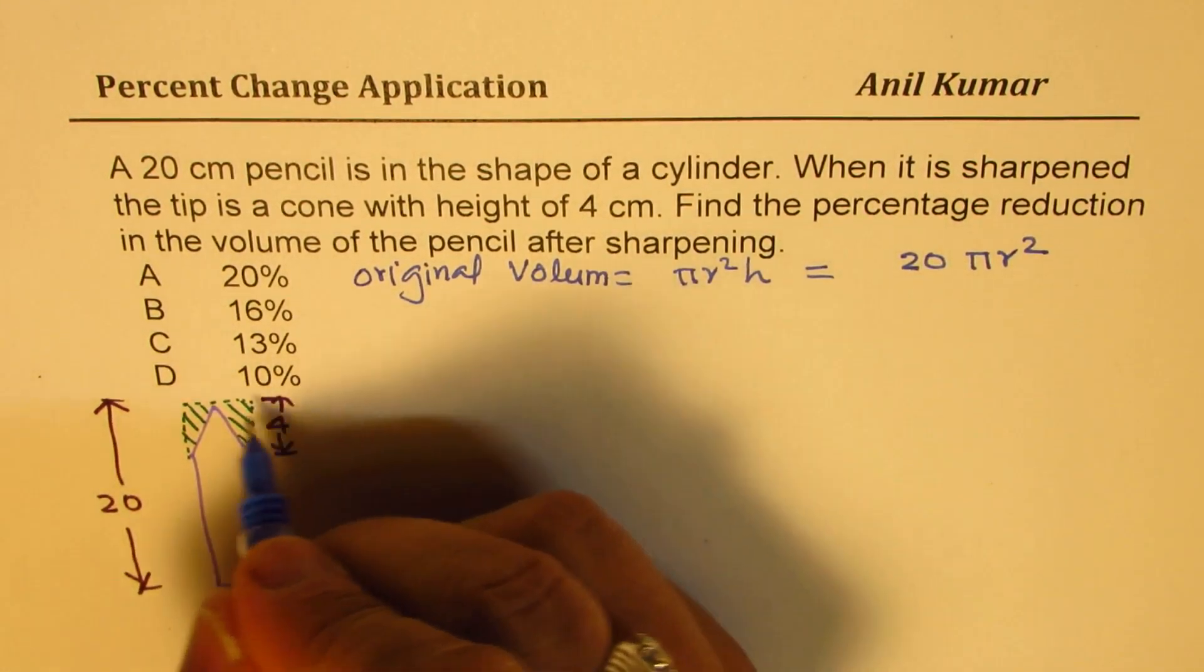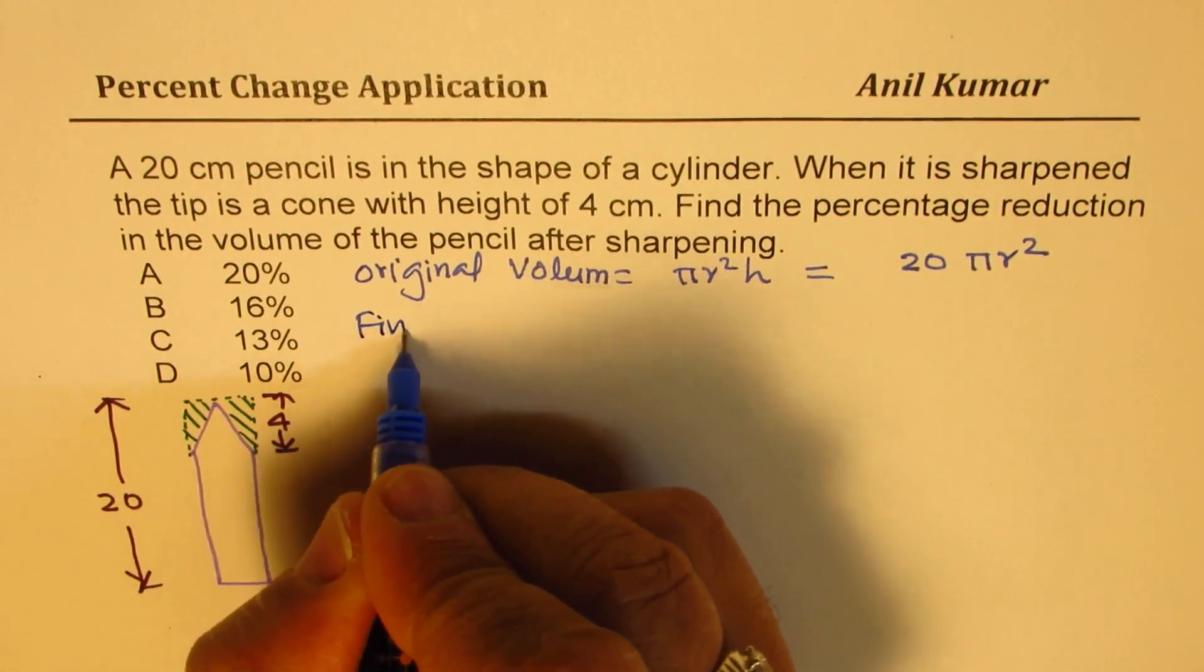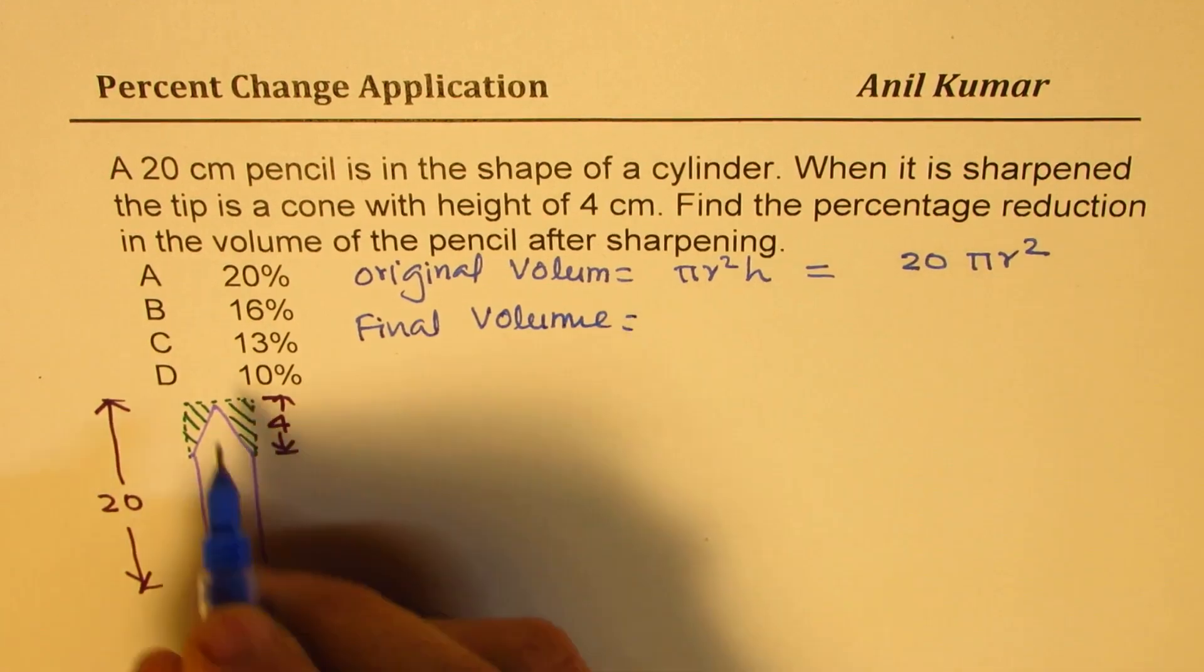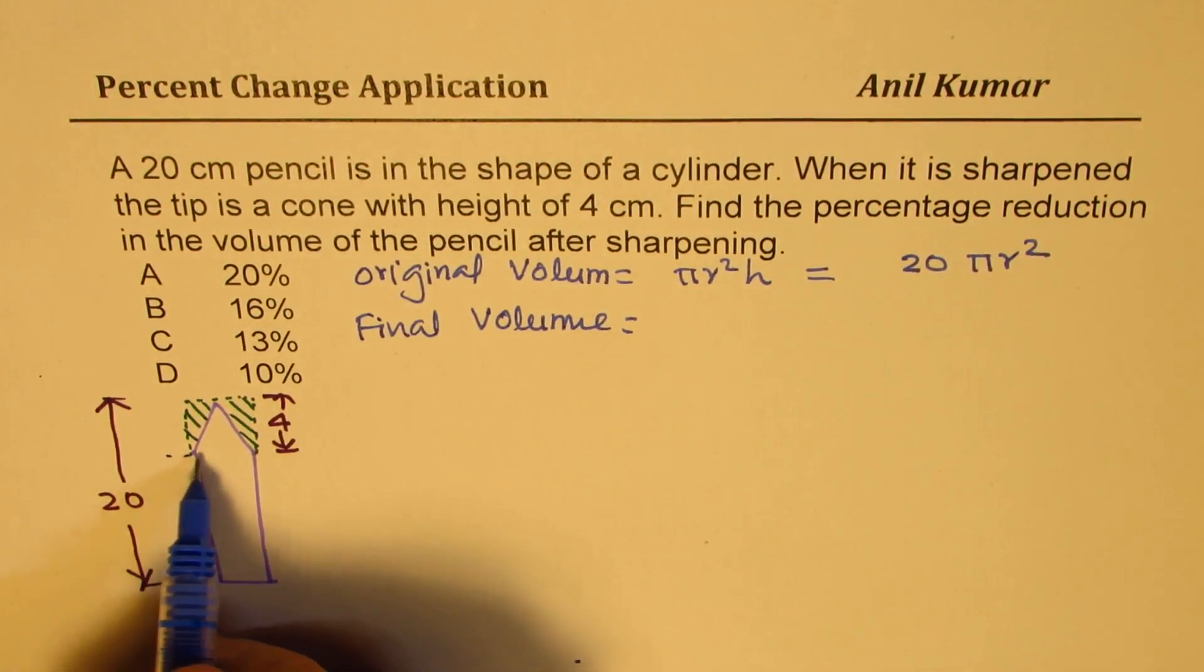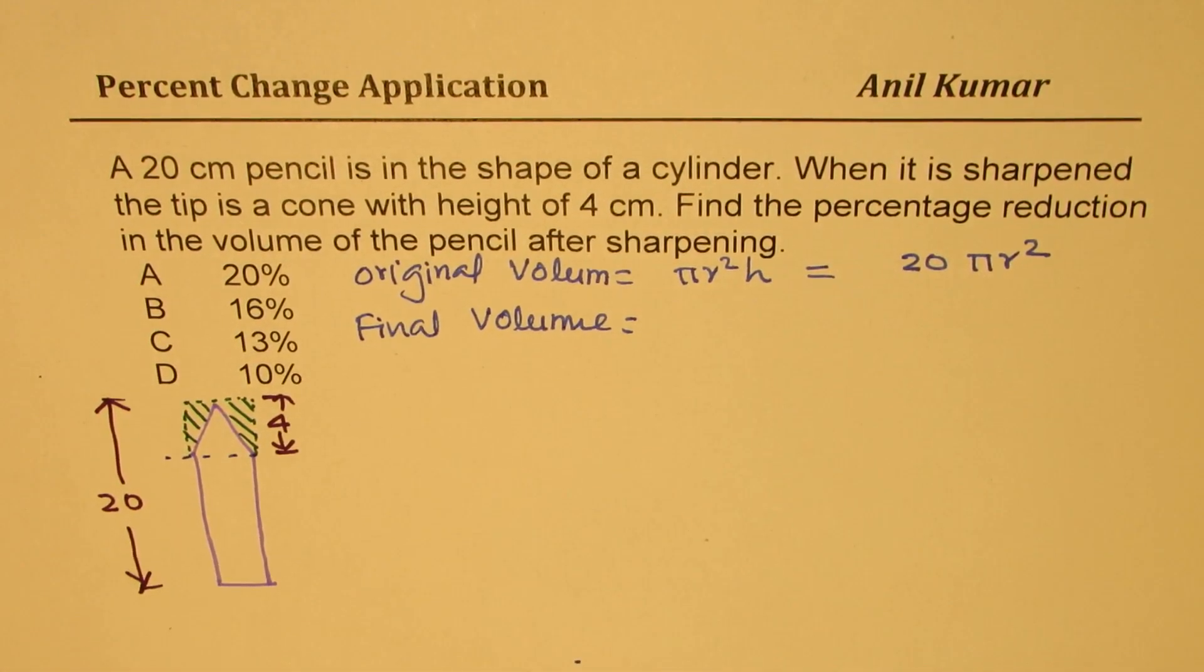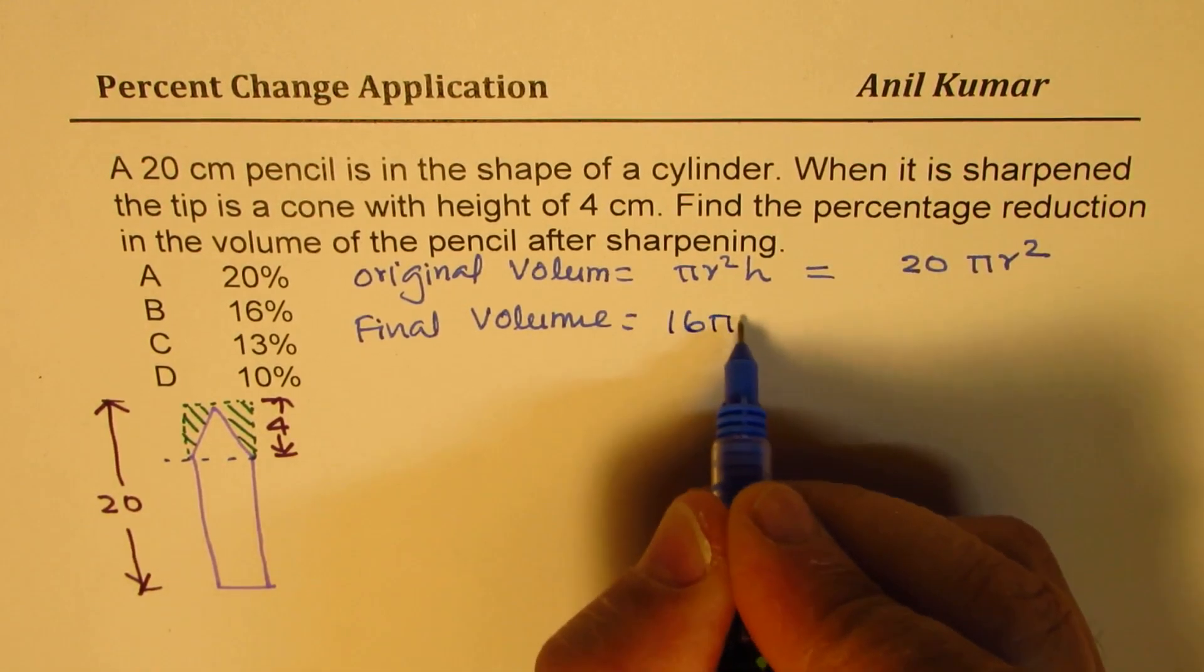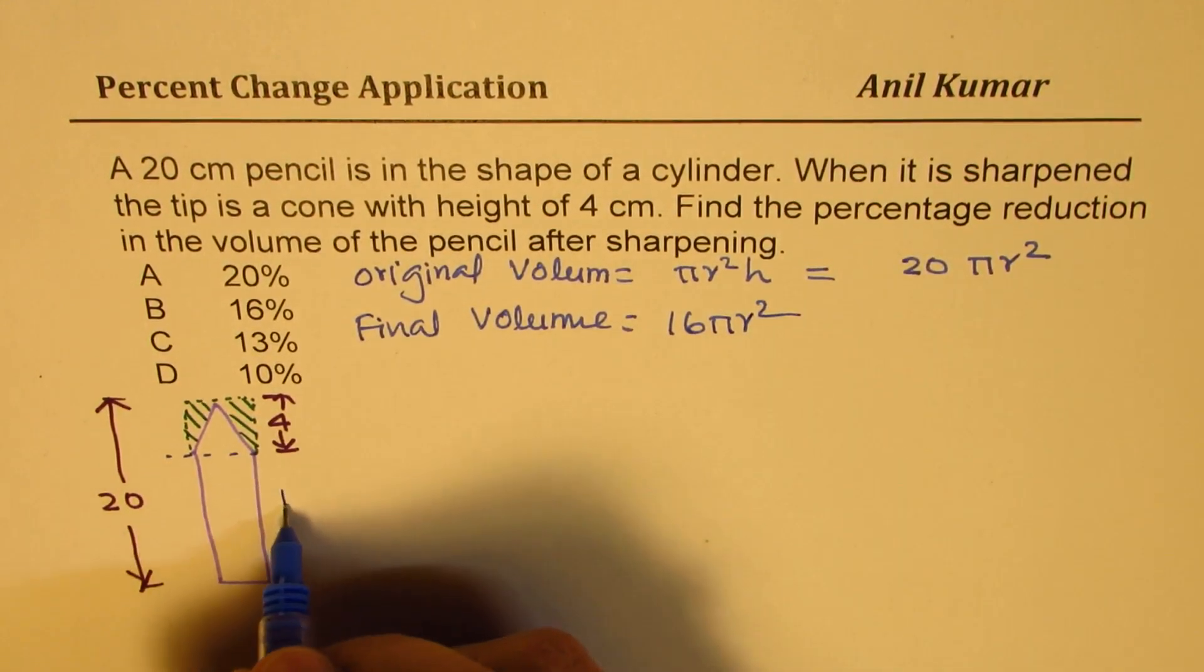Now what is the final volume? Final volume in this case will be up to this point it remains a cylinder. So we can write this as 16πr² since this height is 16.